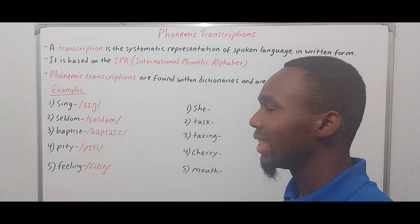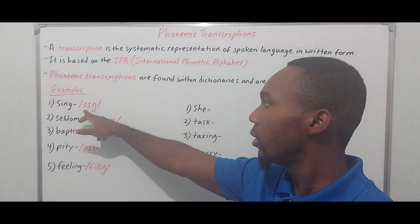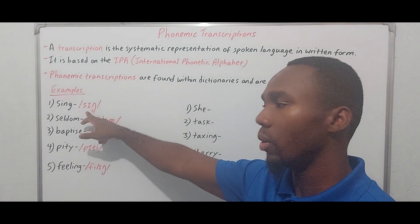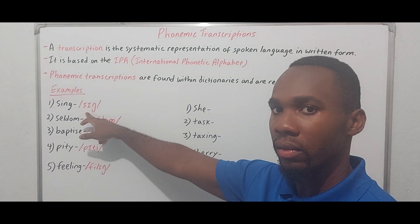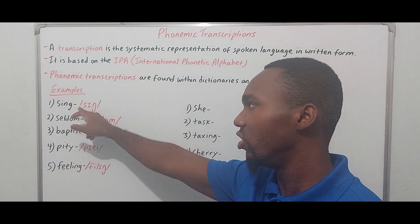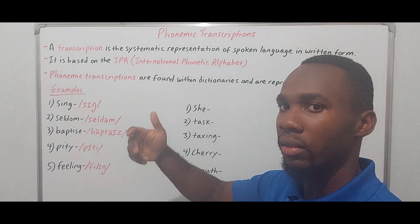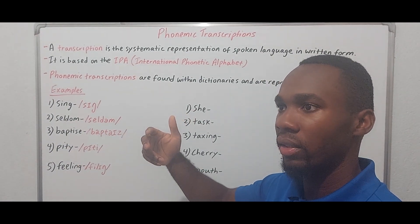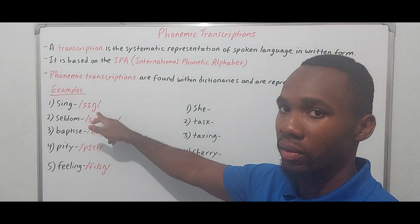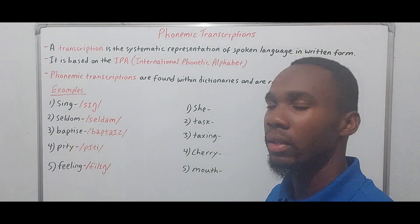Our first example is the word 'sing.' We have the S sound, then the vowel sound found in words like 'kit,' and finally the NG sound — that NG you would find in words like 'sing,' 'ring,' etc. — represented by a symbol that looks like an N with a stroke at the bottom. So: sing.